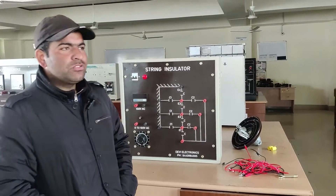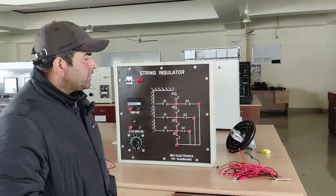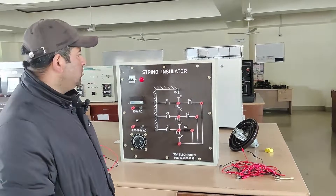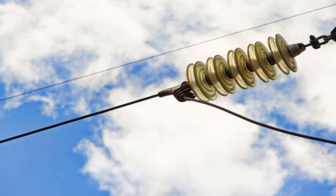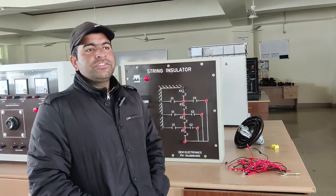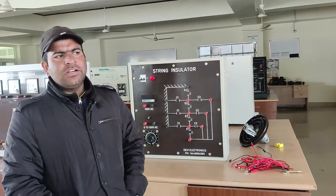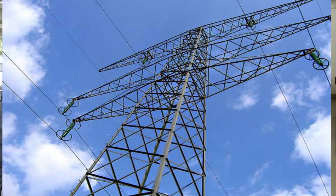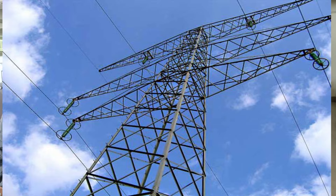Today we are going to demonstrate a practical in power systems on string insulators. This practical deals with the transmission of electrical energy. When we generate electrical energy in any generating station, we transfer it at a particular voltage level. During transmission, we use different power structures, and depending upon the operating voltage, we determine the level of insulation required.